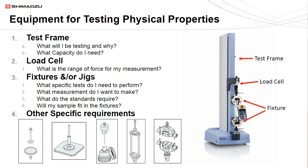If you are considering performing your own physical strength tests, there are a few questions to consider before you configure your system. When selecting a test frame, understand the parameters and measurement requirements: what speed do I need to test, and can this instrument achieve that speed? What is the maximum force, and can this instrument apply that much force? For the load cell, understand the minimum and maximum force range you need to measure. For jigs, ask yourself: what specific tests do I need to perform? What measurement do I want to make? What do the standards require? And will my sample fit in the fixture? Also consider other specific requirements — do I need to test at an elevated temperature or in an aqueous solution?